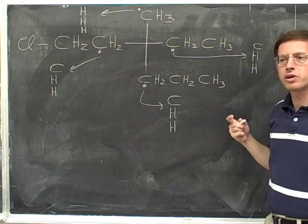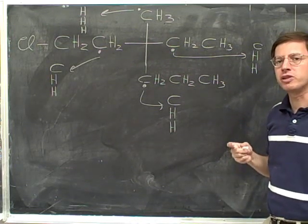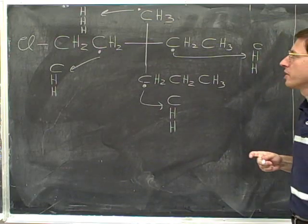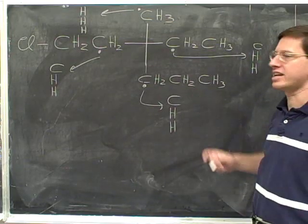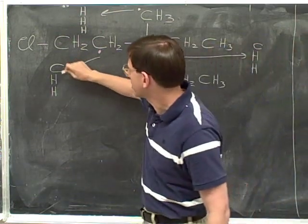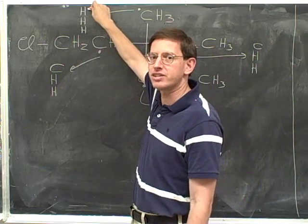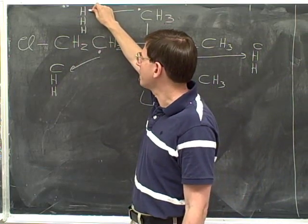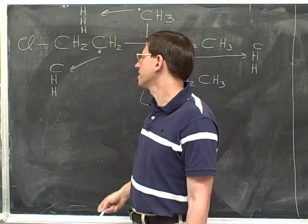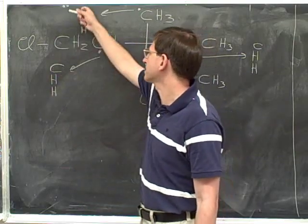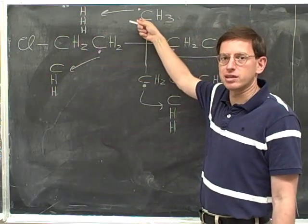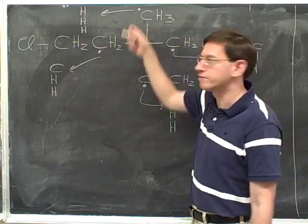Now we look at those four lists and recall that we're going to be looking for the first point of difference between the lists. The first point of difference occurs at the first atom in the list, because for the right, bottom, and left we have a carbon, but the first atom in the top list is a hydrogen. That hydrogen is beaten by the carbon in all the other lists. This means that the top substituent has the lowest priority.